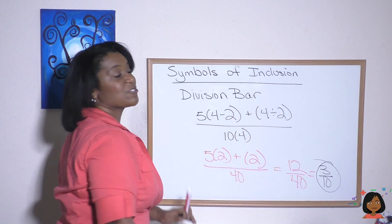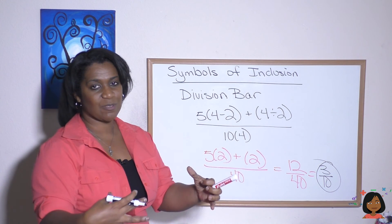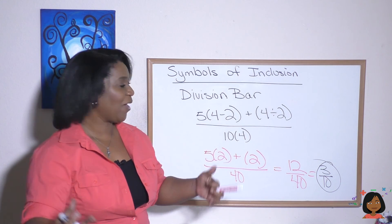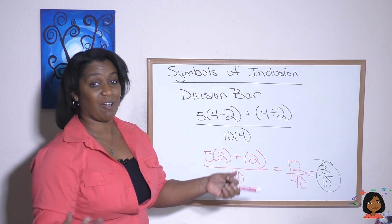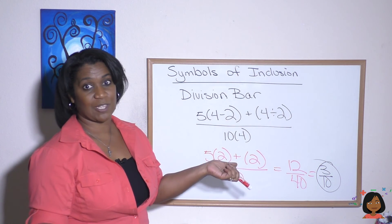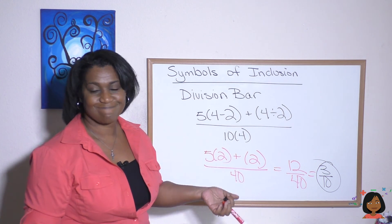Okay, so symbols of inclusion: your job is to work the innermost ones first, work your way out, and remember that the division bar also acts like a symbol of inclusion. We always do that one last.